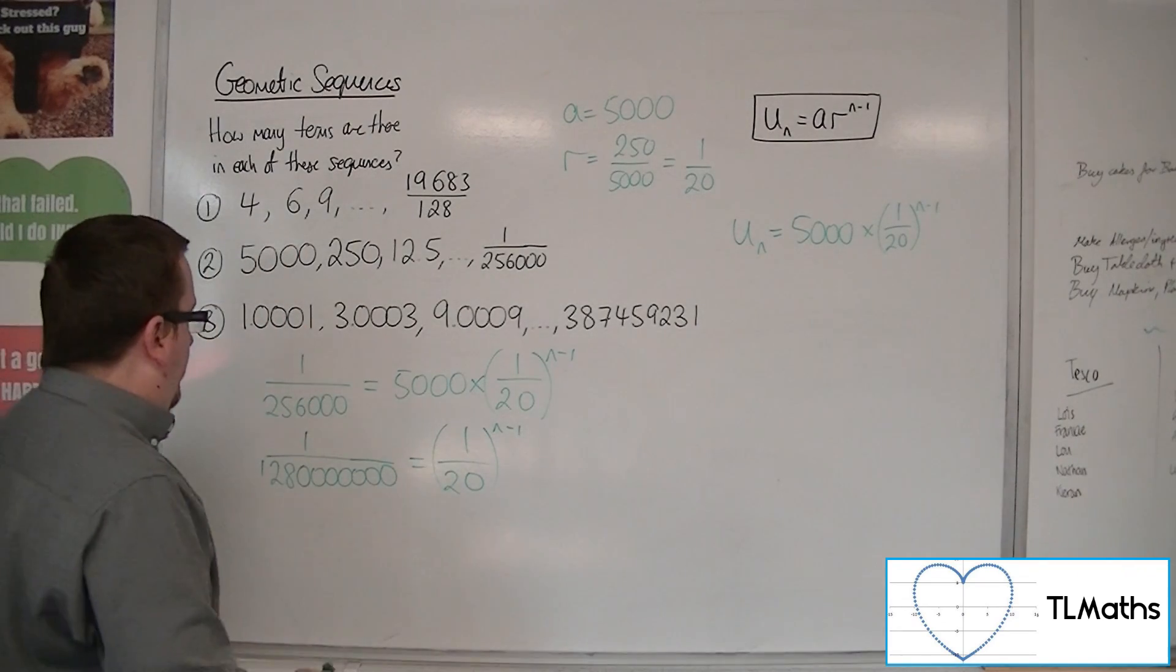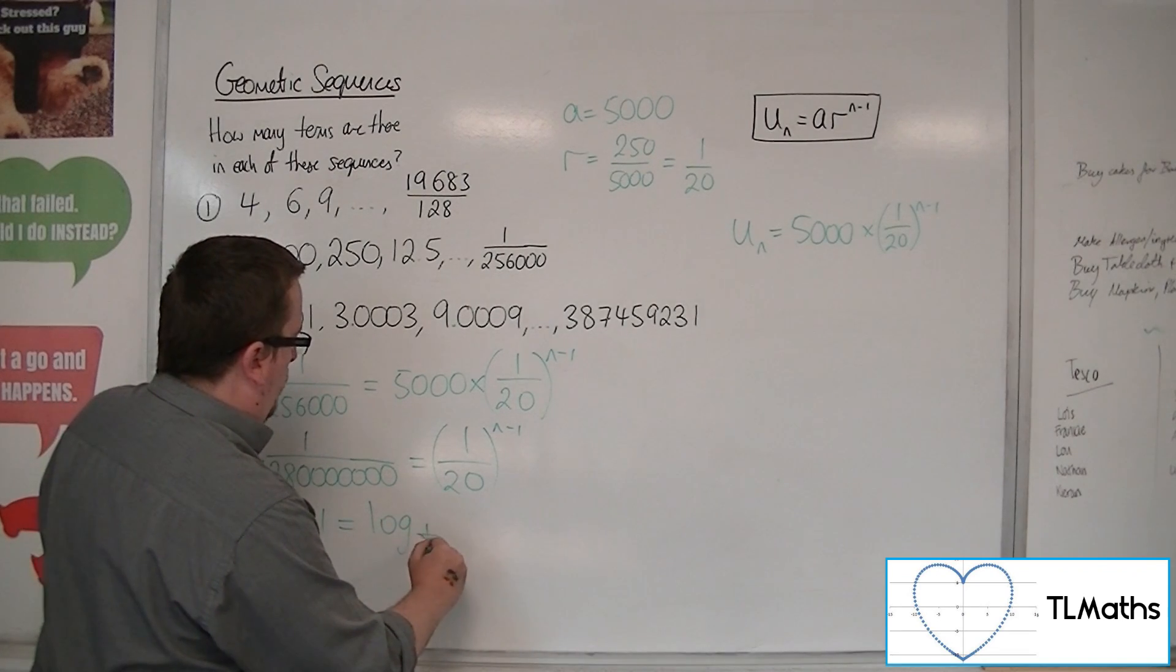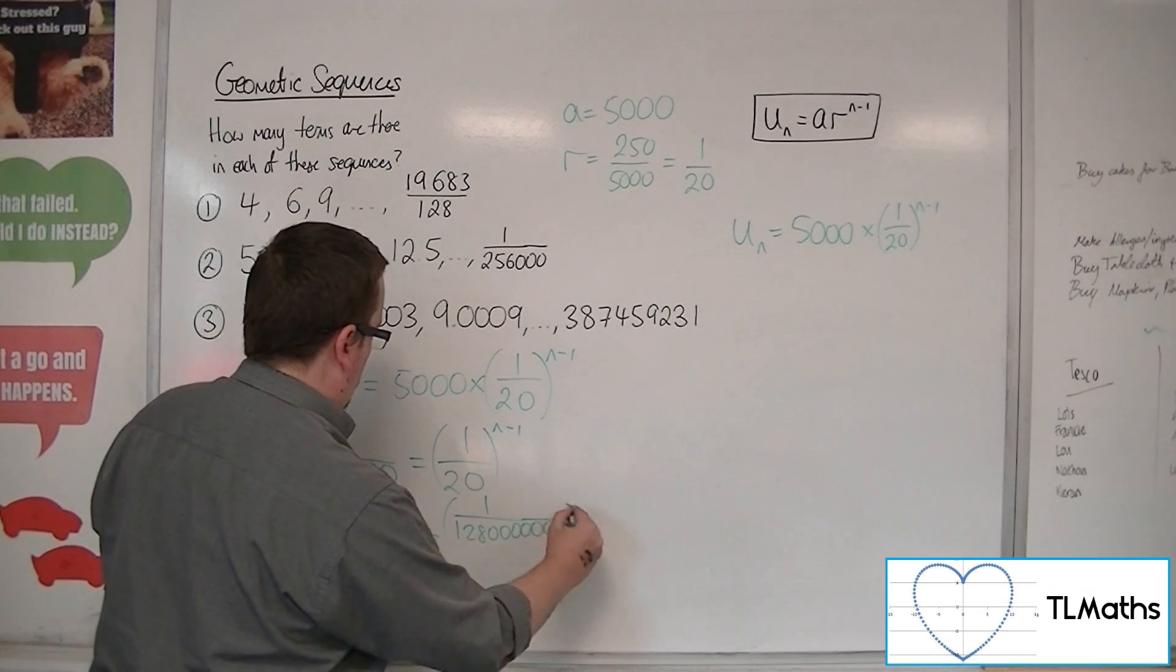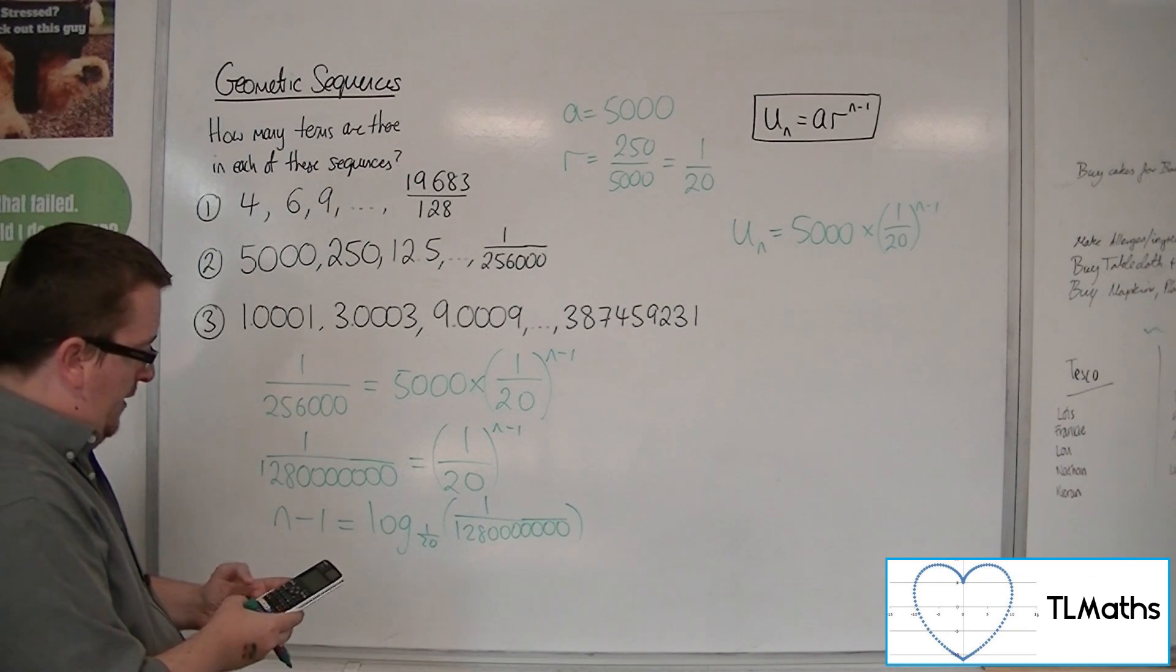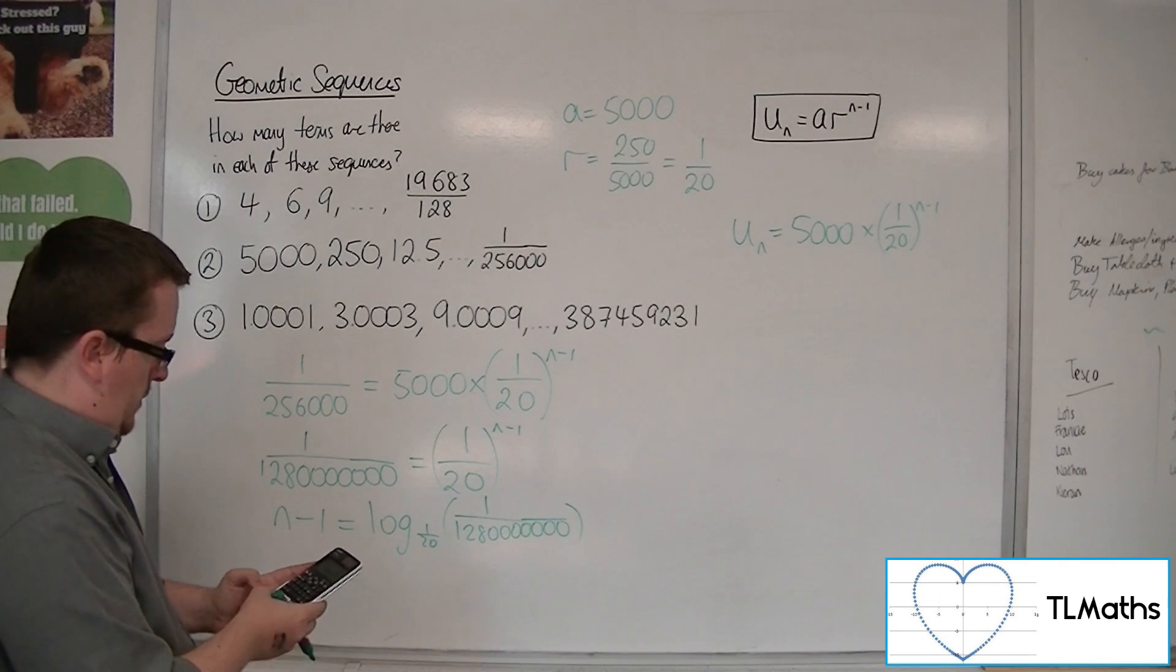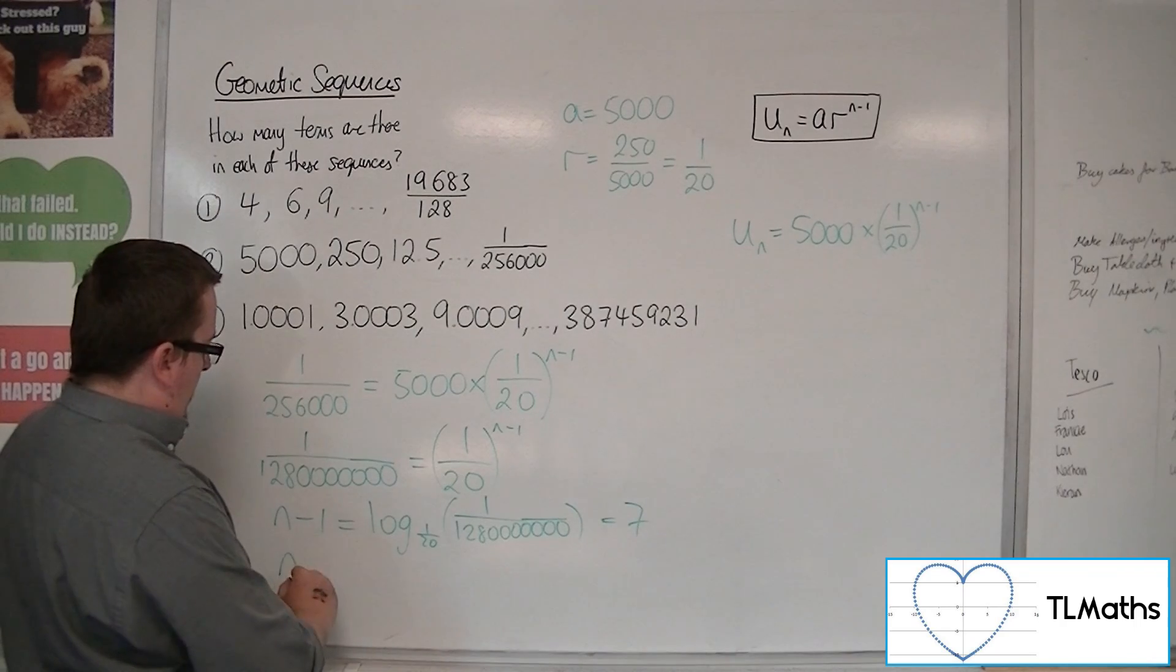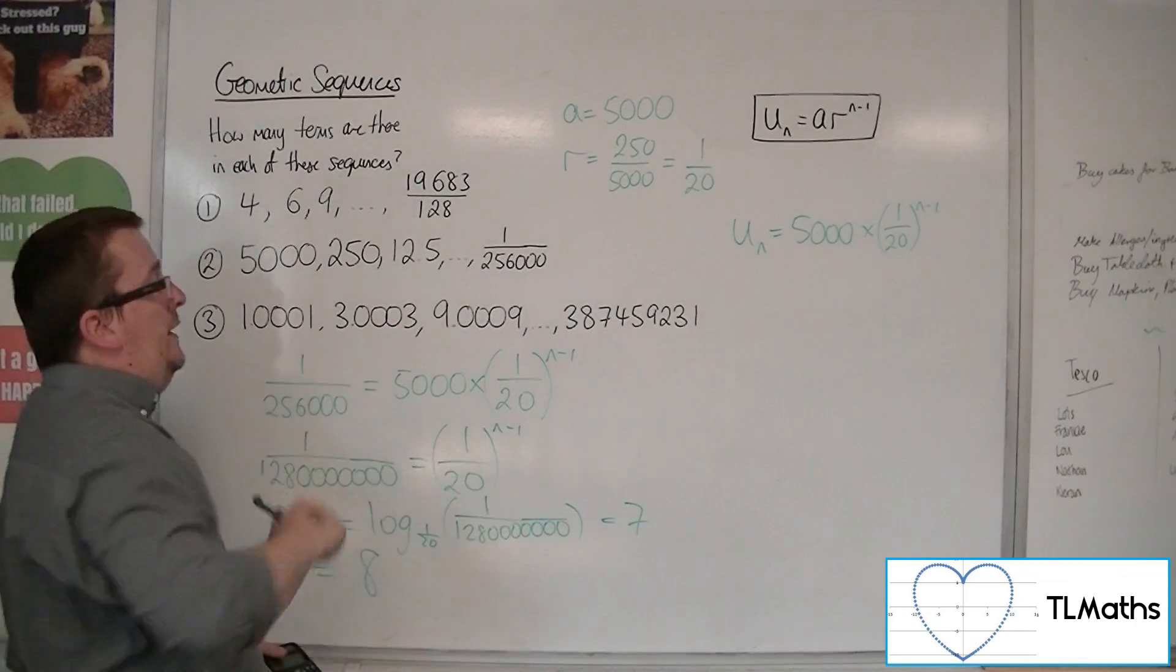I now want to use logarithms. So n minus 1 is log base 1 twentieth of 1 over 1280000. Okay, so pop that into the calculator. 1 over 1280000, and that gets us 7. And so adding 1 to both sides means that n is 8. There must be 8 terms in the sequence for number 2.